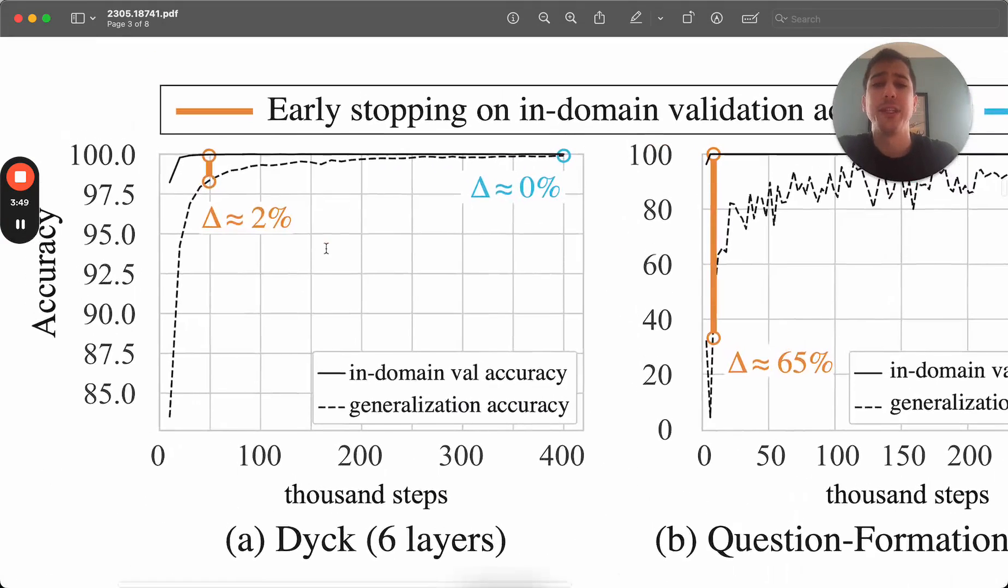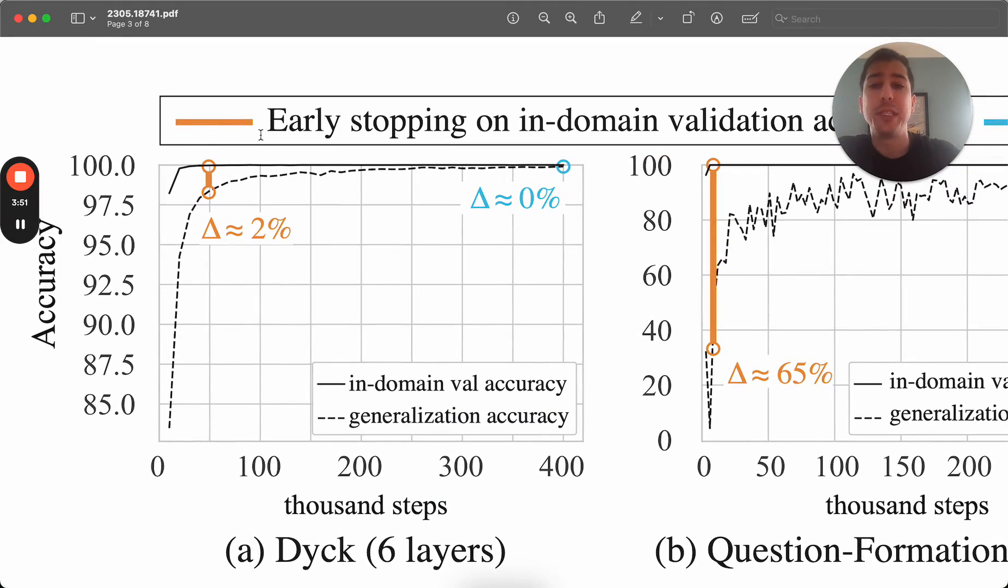So to start, they show that this yellow vertical line here is when you would normally stop training your model and the solid black line is your validation accuracy. And again, I want to point out, there are three data sets here that are relevant. There's the training data set that the model is actually learning on. There's the traditional validation data set that the model is being evaluated against. And that's this solid black line.